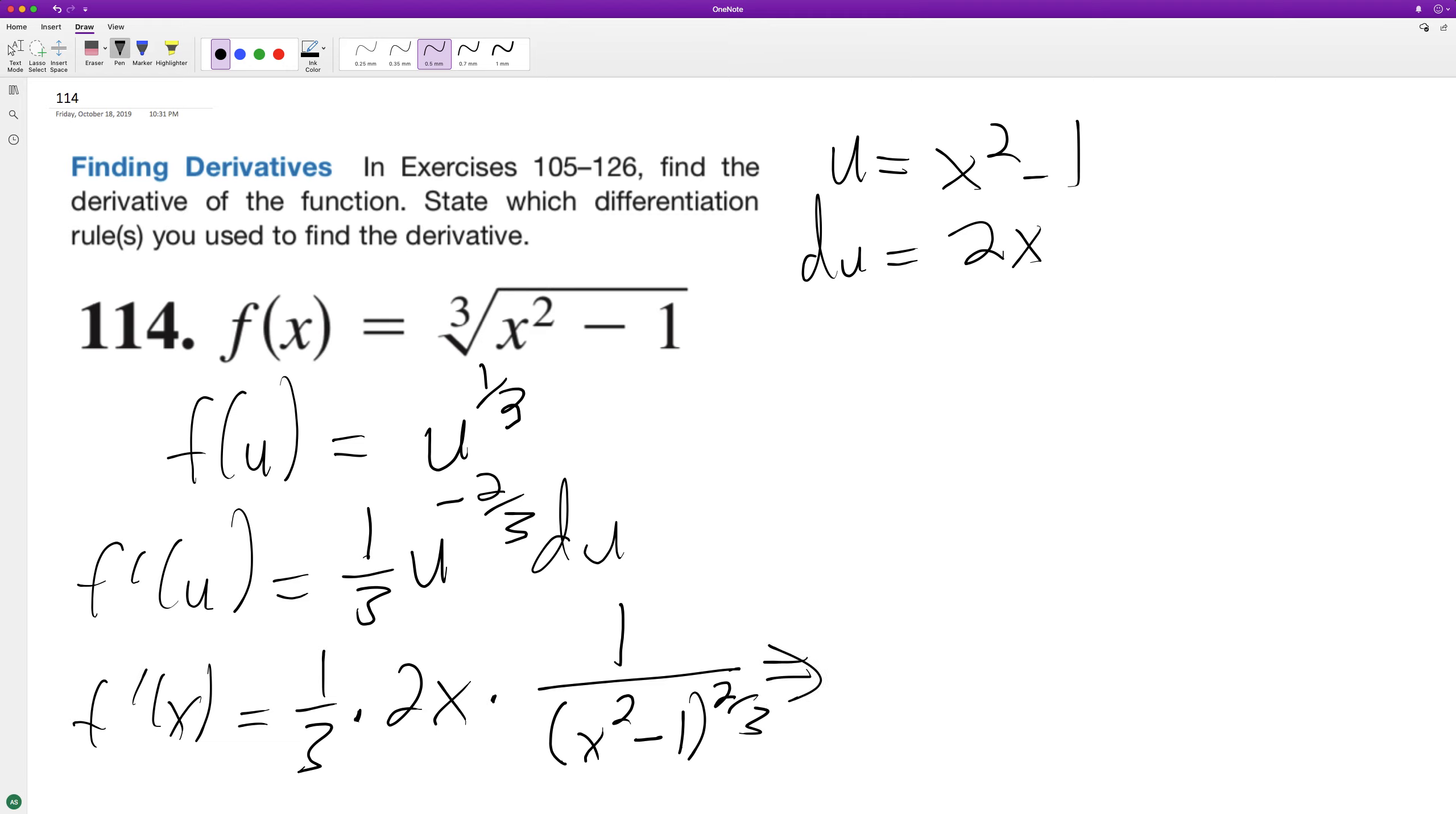So finally to summarize, this is going to be 2x over 3 times x squared minus 1 raised to the 2 thirds. And that's it.